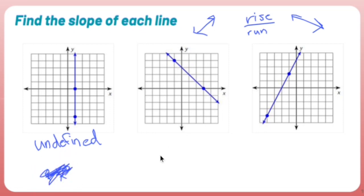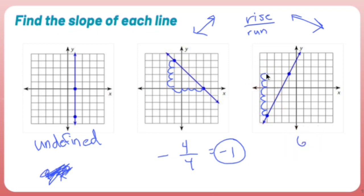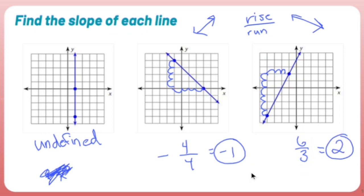This line has a negative slope. Going from one dot to the other, I go down 4 and over 4, giving negative 4 over 4, which simplifies to negative 1. This other line has a positive slope. My rise is 6 and my run is 3, giving 6 over 3, which is positive 2. You could also just go up 2 over 1 from any point on the line. That's how you find slope graphically — easy peasy, lemon squeezy.